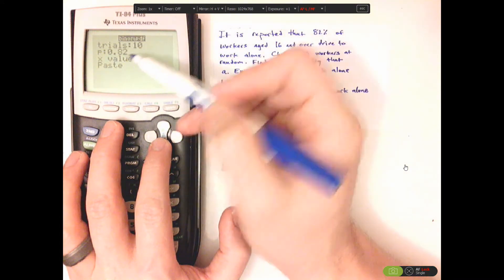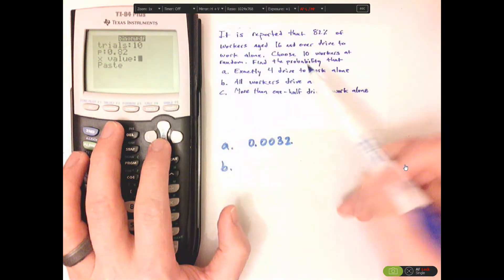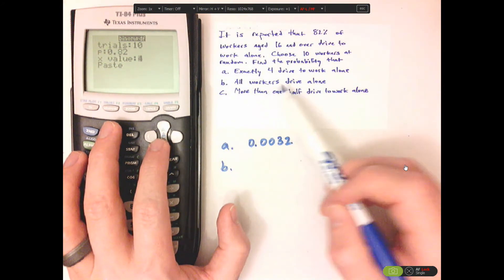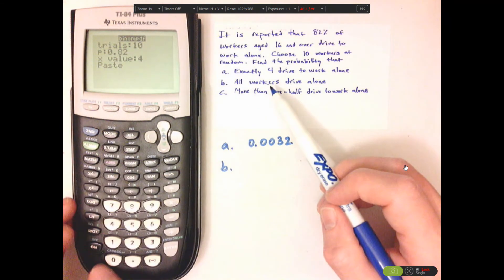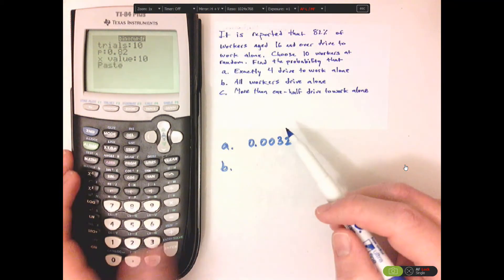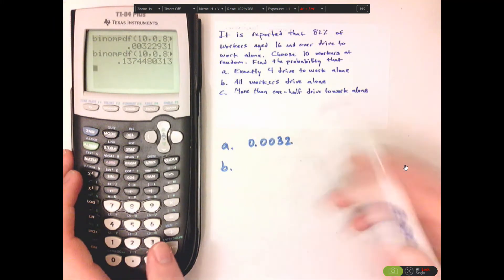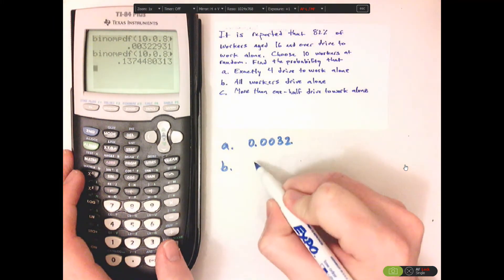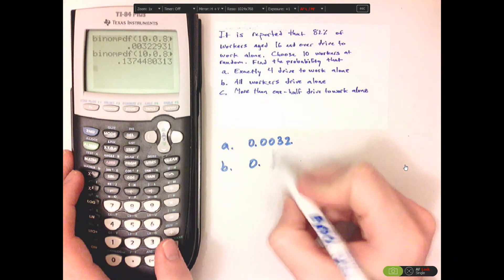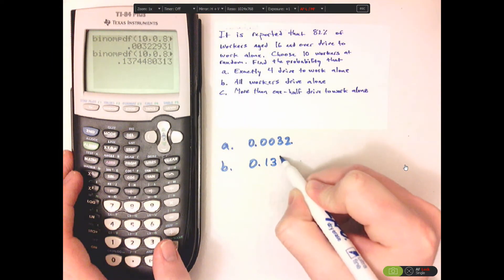Probability is going to be the same, 0.82. And the value is, since it's all workers, it's going to be 10. It's going to be all of them. And paste, and then enter. So that is 0.1374.